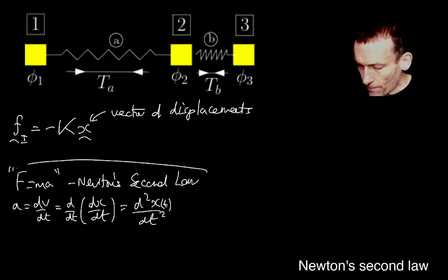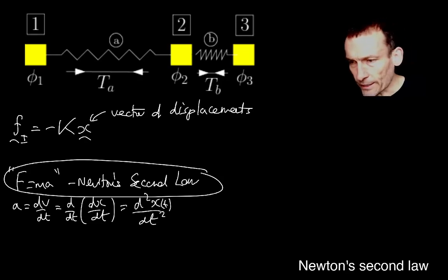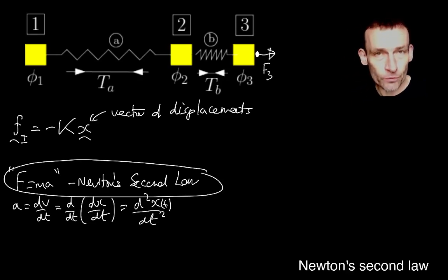So what does F equals ma mean for the mass springs network that I've drawn on the top of this slide? Well, first of all, notice that I could, in principle, have net forces, let's call that one F3, external forces acting in addition. That could be due to gravity or some other reaction force or some other force on the system that's not to do with the springs.